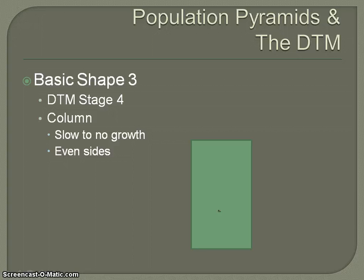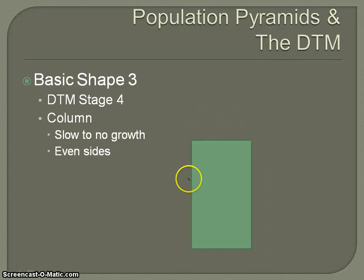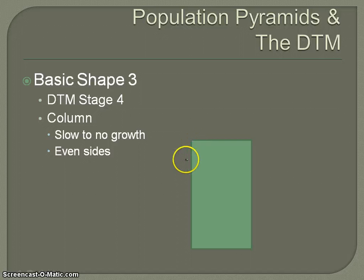Basic shape three is related to demographic transition model stage four. It's called the column or rectangle, and this indicates slow to no growth. We no longer have the triangle shape at the top, which means that as people get older, they're simply going to die and people are just replacing themselves. There's no more space in the population to fill in, so you're not going to have a whole lot of growth.